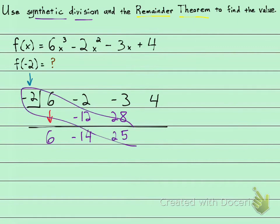And multiply. Negative 2 times 25, that's negative 50. And then combine to get our answer of negative 46.